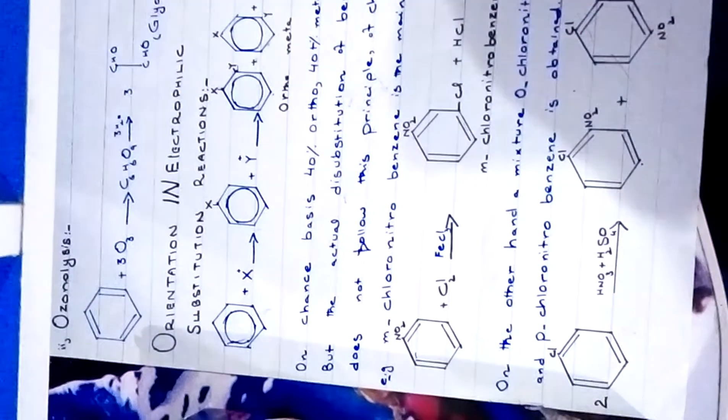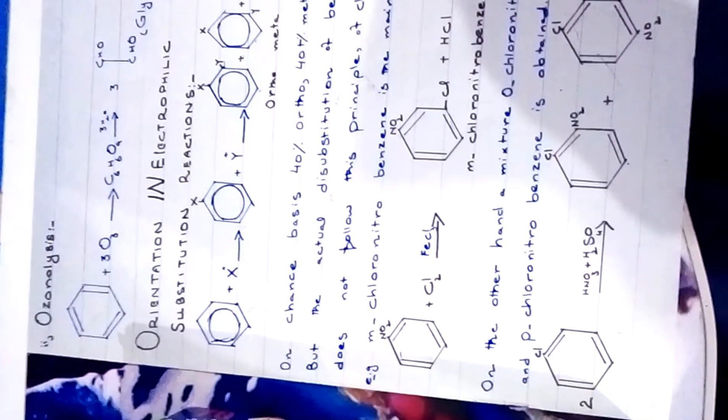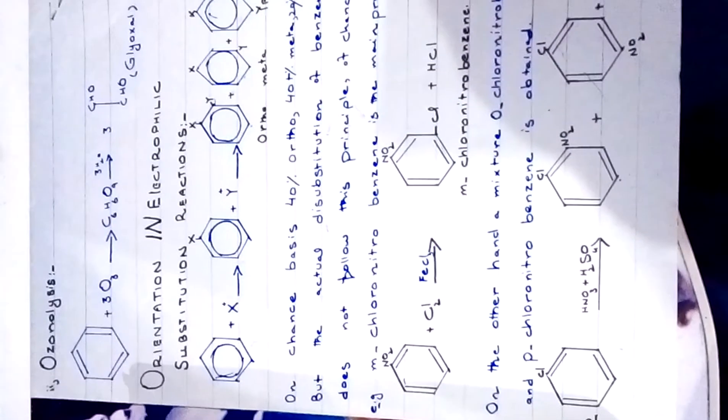This means that the group present in the mono-substituted benzene ring has the directive effect and thus determines the position or orientation for the new incoming groups. Therefore, there are two types of groups: ortho and para directing, and meta directing groups.